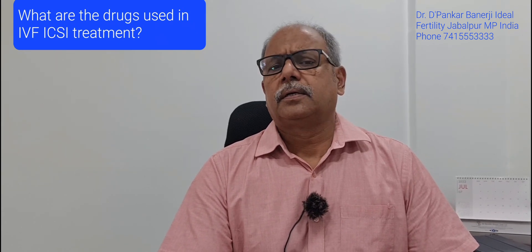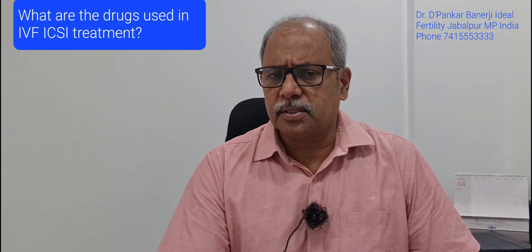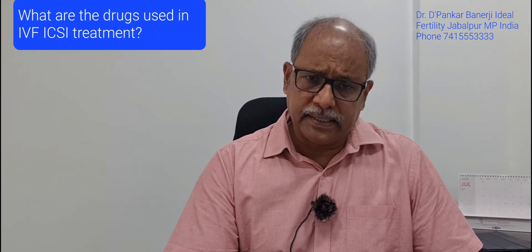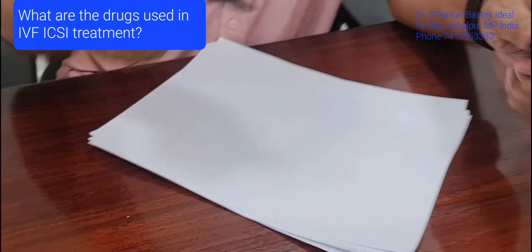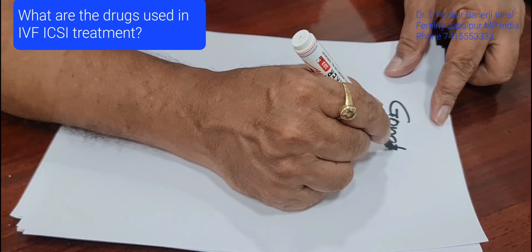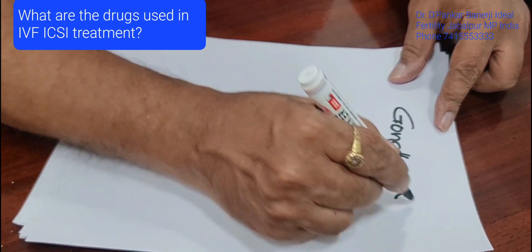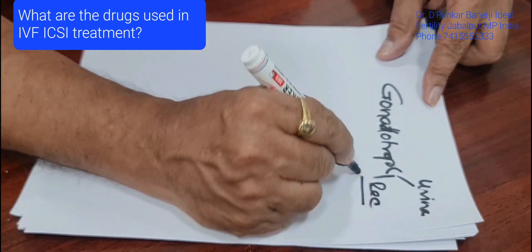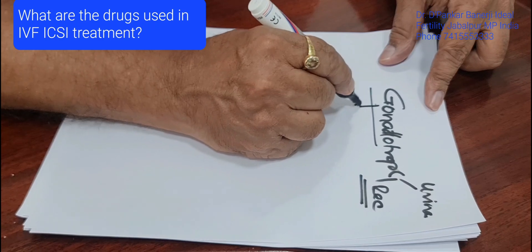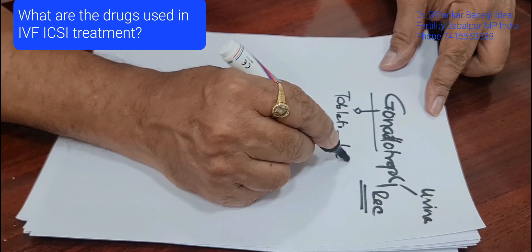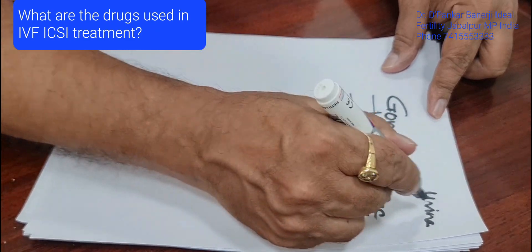Tablets like letrozole are very useful in mild stimulation. In IVF protocol, we use gonadotropins — either urinary or recombinant — along with tablets like letrozole in mild stimulation, as it works very well with gonadotropins.